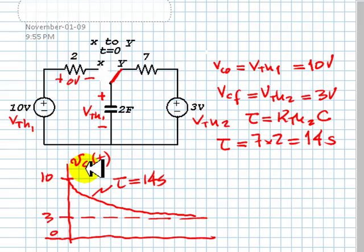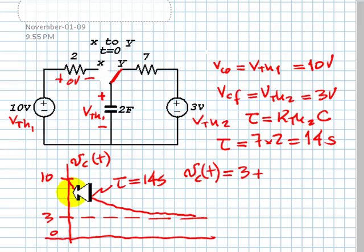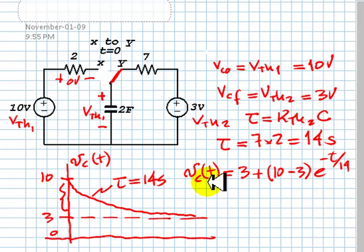We can write Vc as a function of time. It has a final value of 3, and an exponential with amplitude riding on top: initial value minus final value, times e to the negative t over tau. That is the voltage of the capacitor as a function of time — Vc(t) = 3 + 7·e^(−t/14).